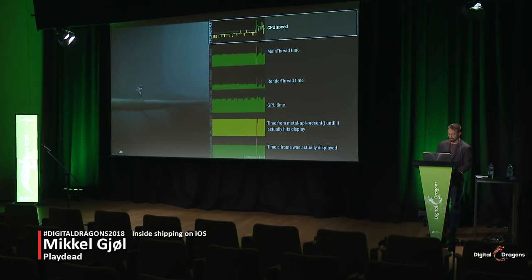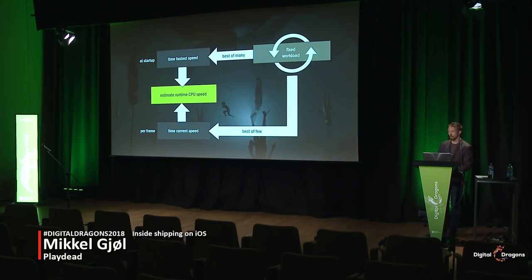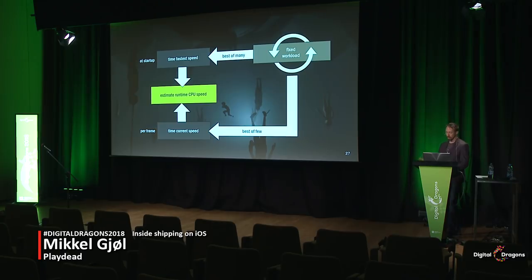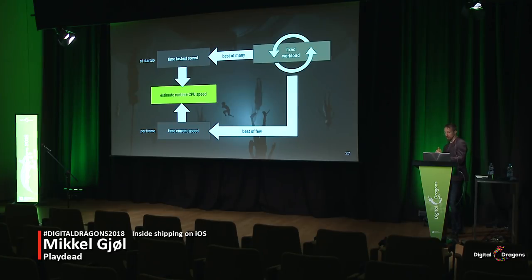The way we do that: at startup we assume the device is not overheating, then we run some workload many times so we're pretty sure the frequency is at its maximum, and we time that a couple of times to figure out the absolute fastest execution speed for that workload. At runtime while profiling, we run the same workload — though far fewer times — and pick the best of those. By comparing it to the fastest speed, we can figure out the current CPU speed roughly. That seems to work pretty well.